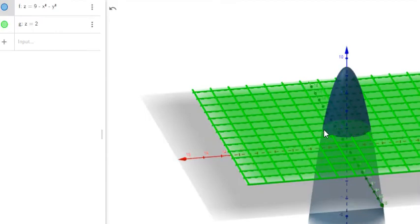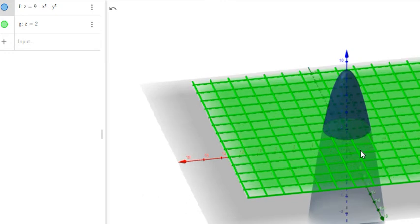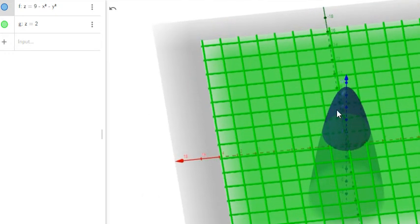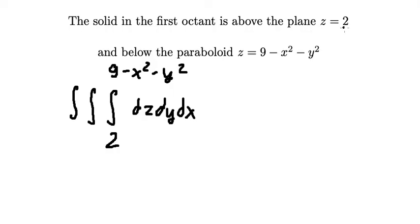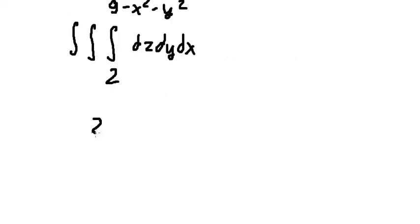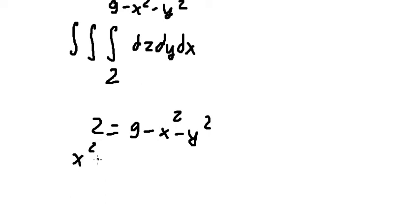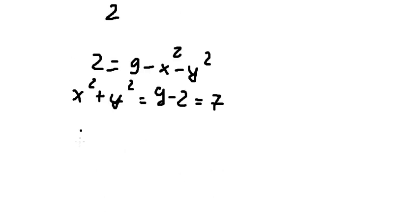We need to find the bounds of y and x. Looking at the figure, the intersection of z equals 2 with the paraboloid gives a circle. Setting z equals 2 into the paraboloid: 9 minus x squared minus y squared equals 2, so x squared plus y squared equals 7. The radius is the square root of 7.